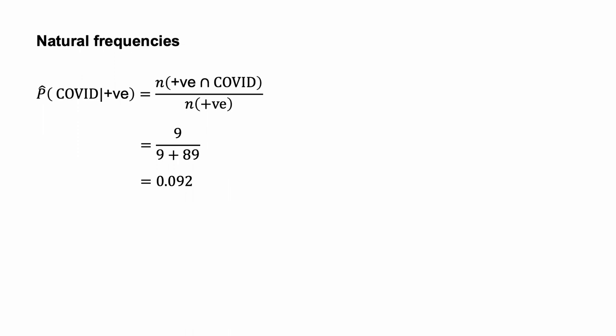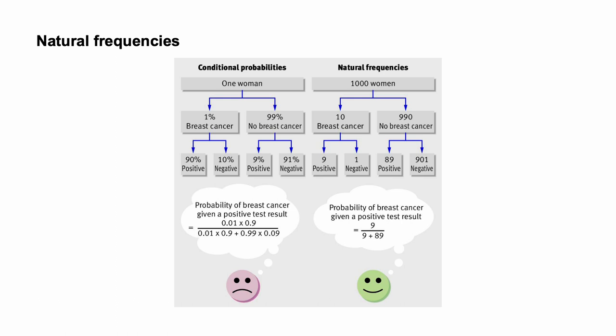Hofraj and Gigerenza, 1998, reported that this change in representation increased the proportion of correct answers among physicians from 10% to 46%. There is evidence that you can get further gains through a frequency tree representation — for example, Spiegelhalter and Gauge, 2015. Below is one such tree from Gigerenza, 2011, which they compare with a tree using conditional probabilities. The numbers at the bottom of the conditional probability tree do not contain the base rate information — you can't simply compare them to calculate conditional probabilities; you need to refer to the middle layer. Conversely, the natural frequency tree contains all you need to calculate the conditional probability in the bottom row.